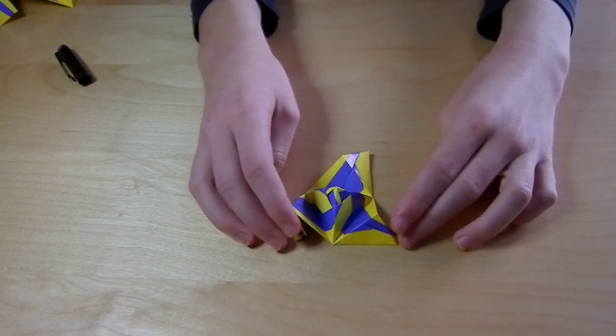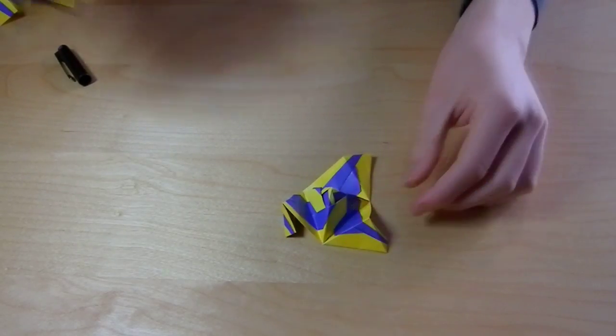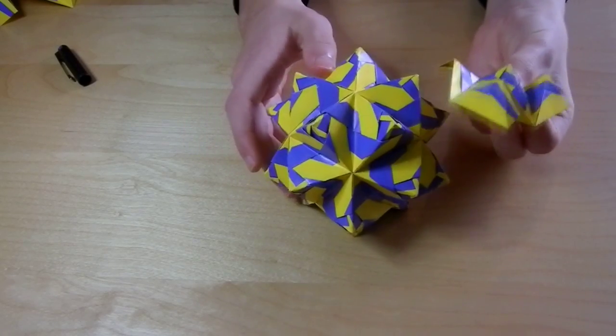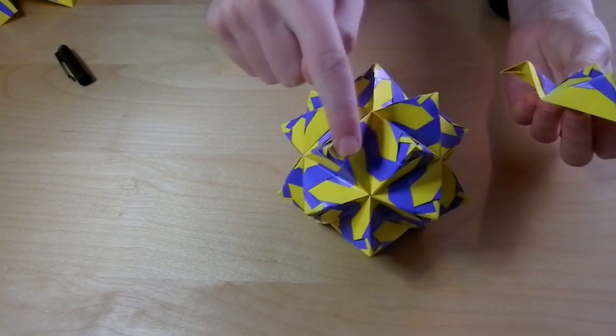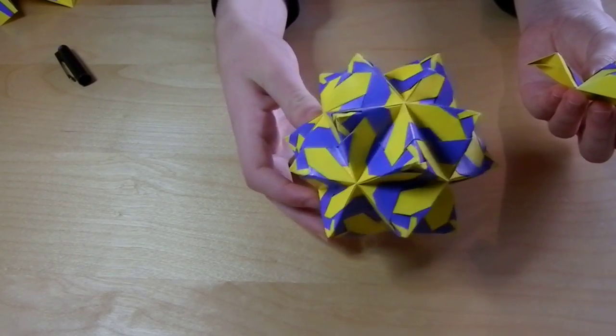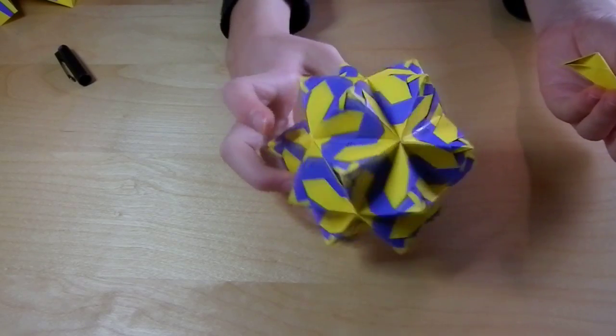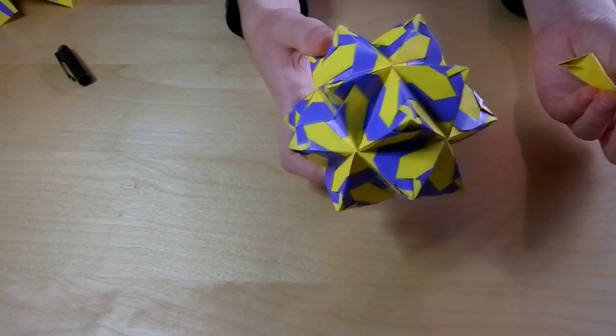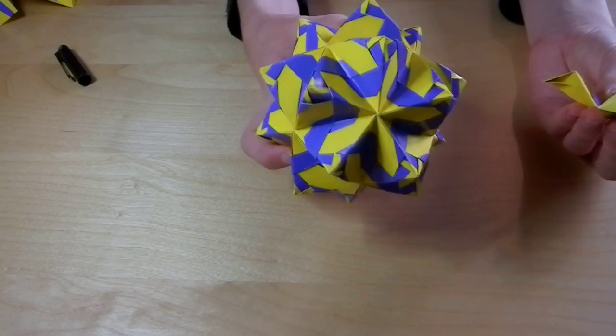And then you have created one point. So to make the Kusudama you just repeat this and keep creating 5 points surrounded by 5 points. No matter where you turn the model there will always be 5 points. It's the same with every Kusudama with 30 units.